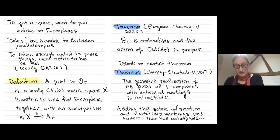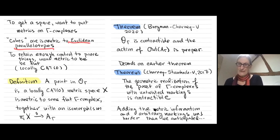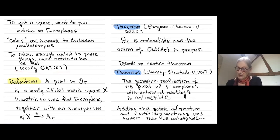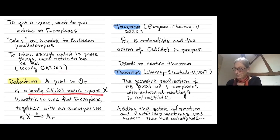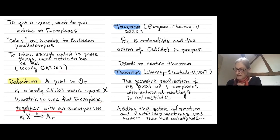So I've described what a gamma complex is. To get a space I want to put metrics on these gamma complexes. The cubes I was describing won't be actual cubes — they'll be isometric to Euclidean parallelotopes. To keep control I want these metrics to be flat, i.e., locally CAT(0). So a point in my space is a locally flat metric space isometric to some flat gamma complex, marked by an isomorphism between the complex and my right-angled Artin group.